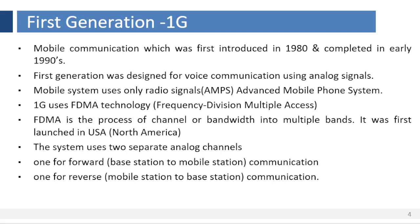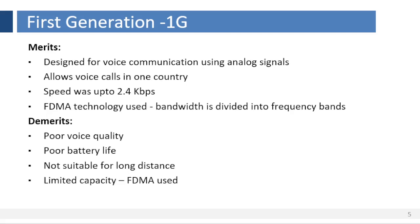FDMA is the process of dividing a channel or bandwidth into multiple bands. In FDMA, the available bandwidth is divided into frequency bands. Each station is allocated a band to send its data. In other words, each band is reserved for a specific station, and it belongs to that station all the time.